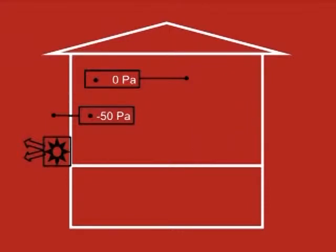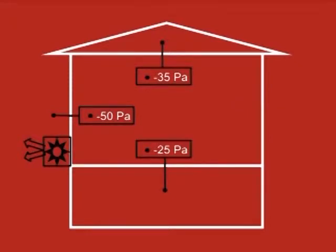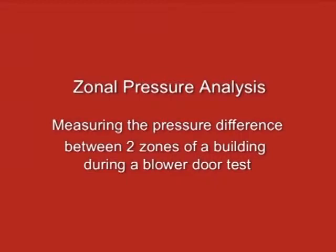Ideally, if we measure the pressure difference between two areas during a blower door test, the results will be either 0 pascals — within the same zone — or 50 pascals, if one area is inside and the other is outside the building. Unfortunately, we often measure pressure somewhere between 0 and 50. Measuring the pressure difference between two zones of a building during a blower door test is called zonal pressure analysis.